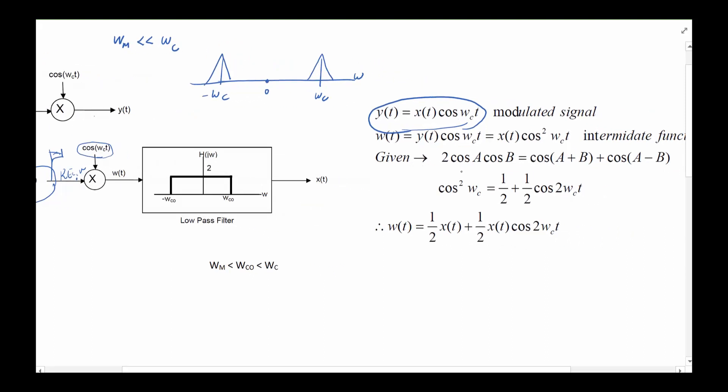w(t) basically is going to be y(t) times cosine of omega_c*t. Now if you write it in terms of x(t) replacing y(t) with x(t) times cosine, we're going to get this. Now we know this relationship of cosine(A) times cosine(B). In this case you can write cosine squared, that's cosine of omega_c*t times cosine of omega_c*t, and if you plug it in here you'll end up with this equation.